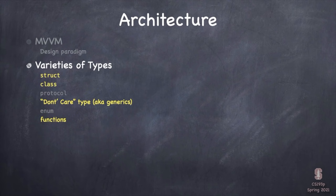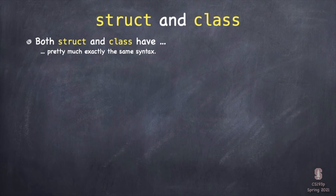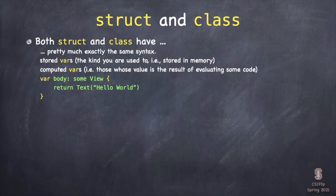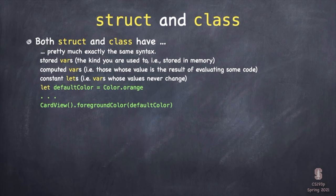I'm only going to cover four of these types today — we'll talk about protocols and enums a little later. Struct and class are very similar, so I'm going to talk about what's the same about them first. Both can have stored variables — variables that live in memory, like isFaceUp: Bool from the demo. There's also computed variables, whose value is computed from some inline function — we saw that with the body var. They both can have lets, which are constants, and they both can have functions.